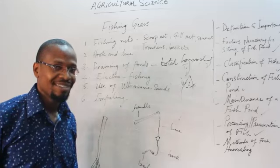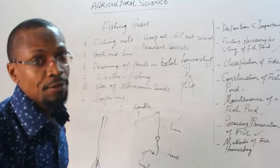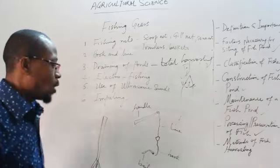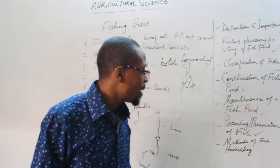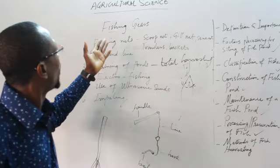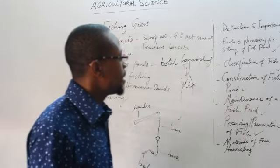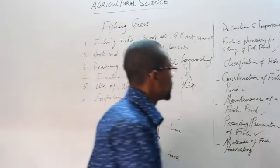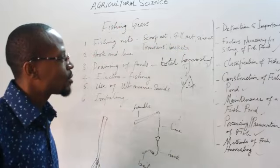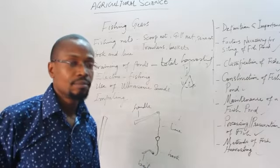These are the methods of harvesting fishes. We have looked at fish farming and all the various subtopics: the definition and importance; the factors for siting a fish pond, including site selection, soil, topography, and water supply; the classification of fishes based on habitat — freshwater and saltwater — and based on body structure — bony and cartilaginous. Bony fishes are generally found in freshwater while cartilaginous fishes are generally found in saltwater, with tilapia being an exception as it can be found in both habitats.